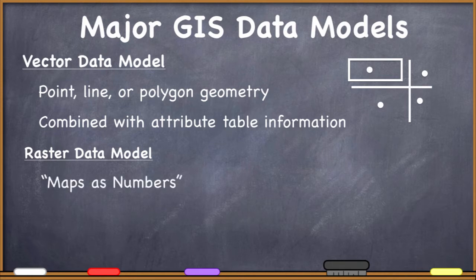The raster data model is about maps as numbers. You frequently hear this phrase when people are talking about rasters: maps as numbers. So basically what rasters allow us to do is to be able to take a map and then convert it into numbers rather directly, and then we can do all kinds of mathematical manipulation on those numbers in order to solve problems, answer questions, and conduct whatever analysis that we want to do.